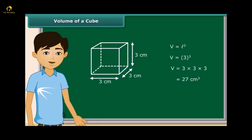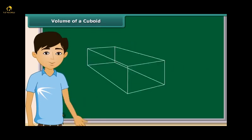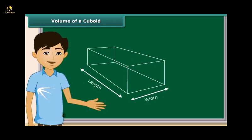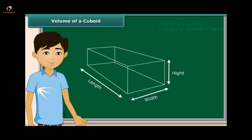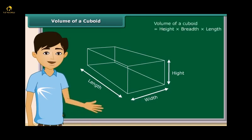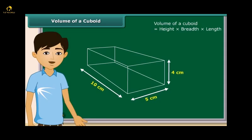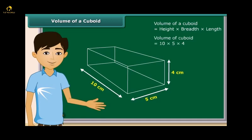Now for the cuboid — a three-dimensional shape with dimensions length, breadth, and height. It is simple to calculate the volume of a cuboid: just multiply height, breadth, and length. The formula is V = L × B × H. Working out the volume of the given cuboid by multiplying all three dimensions gives 200 cm³.